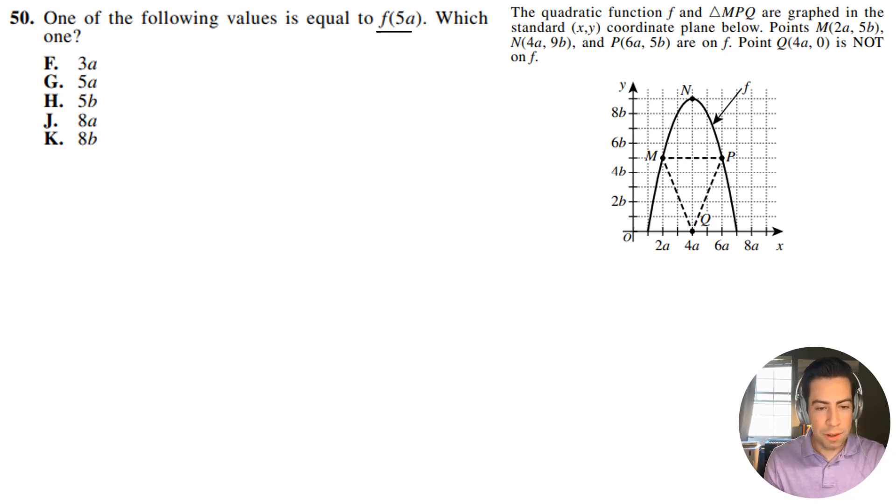One of the following values is equal to f of 5a, which one? All right, guys. So what this means is that we have this function here, and the function is given by this little upside down parabola. So that means that with this function, if I have f of 5a, that means when x equals 5a, what does y equal? That's literally all this is saying.